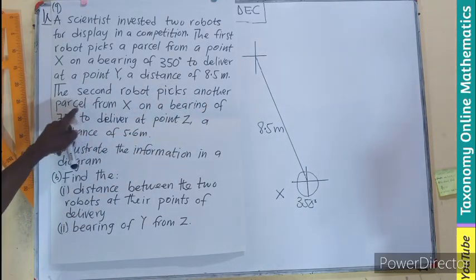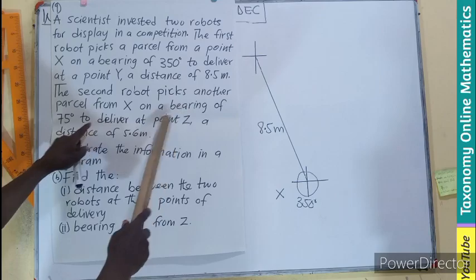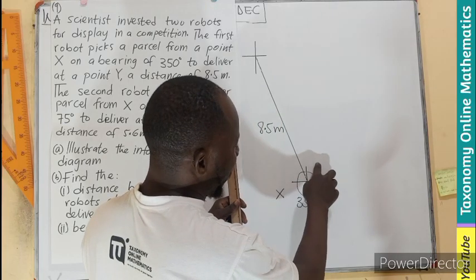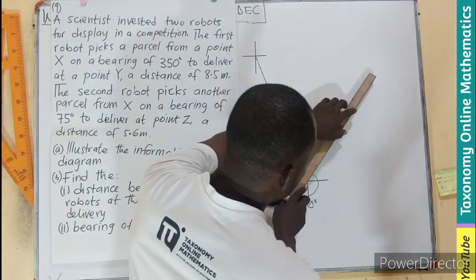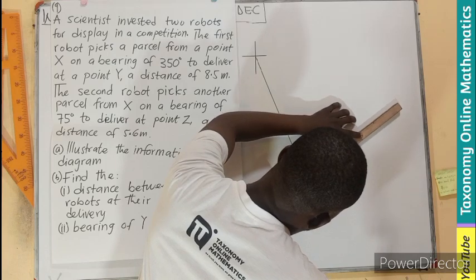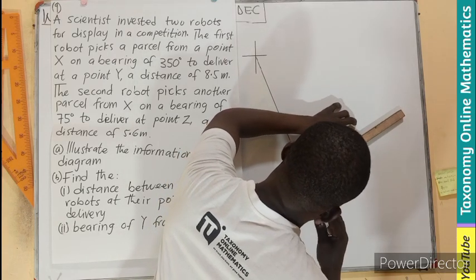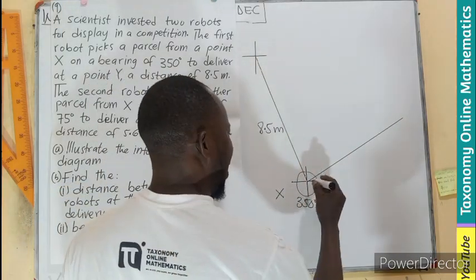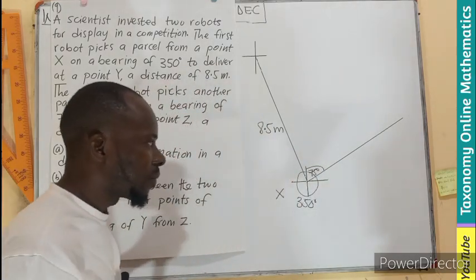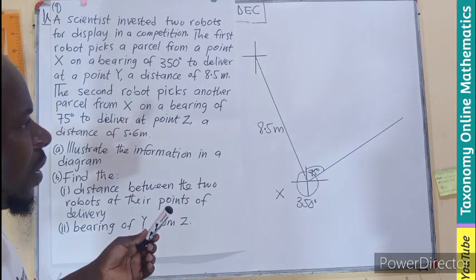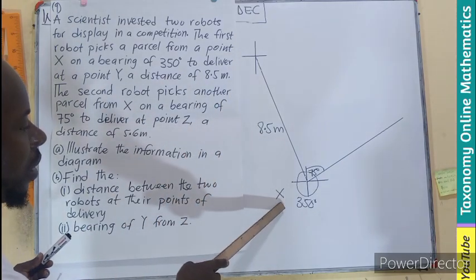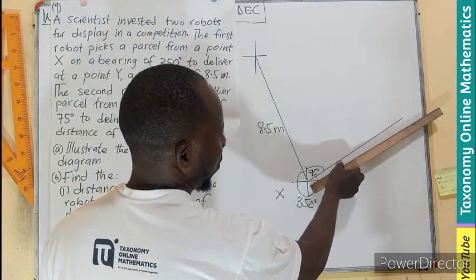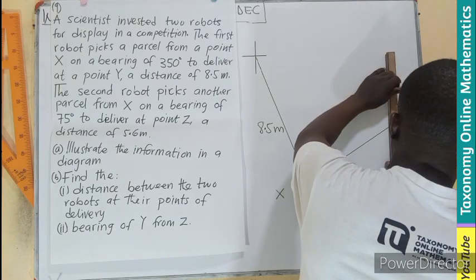The second robot also picked another parcel from X, the same point X, on a bearing of 75. So if you measure 75 on the north, you should be left with 15 down, right? So let's put 15 down and take 75 up. Now, if 75 is there, remember the distance for X to Z is also giving 5.6.